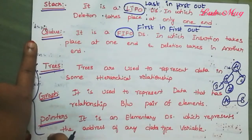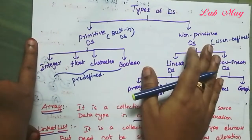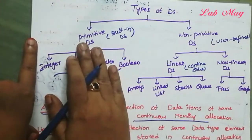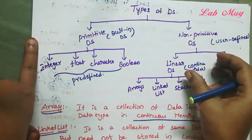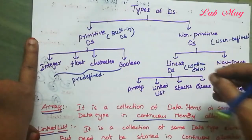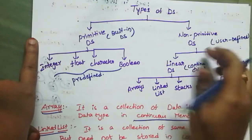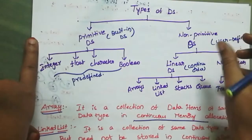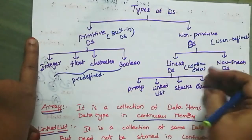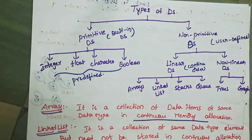Pointers are used to store the address of another data type element. So in total, data structures have two types: Primitive and Non-Primitive. Primitive are the built-in data types. The main focus is Non-Primitive, which are user-defined data structures. Each of these — arrays, linked lists, stacks, queues, trees, graphs, pointers — will be covered in depth in the next videos.